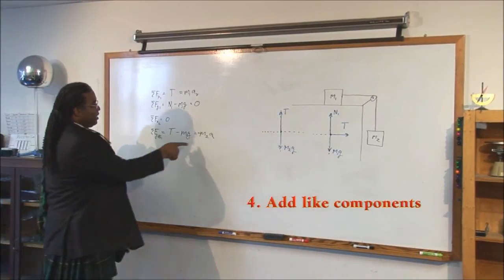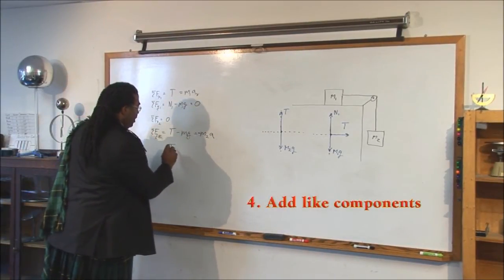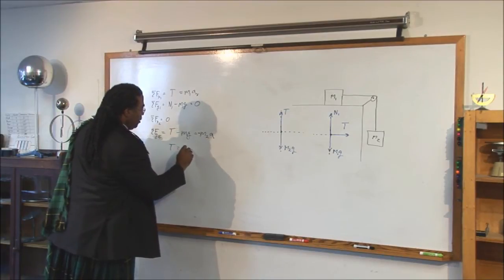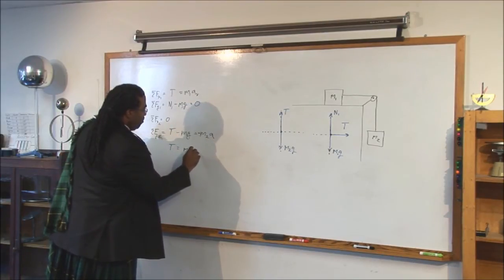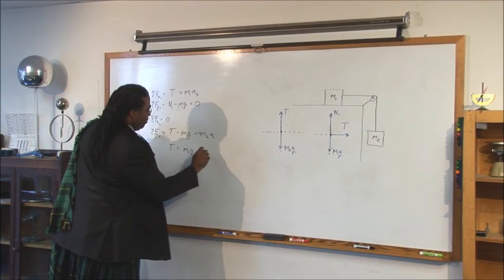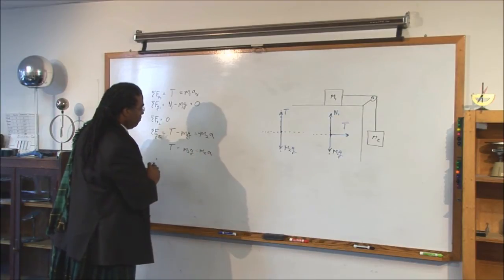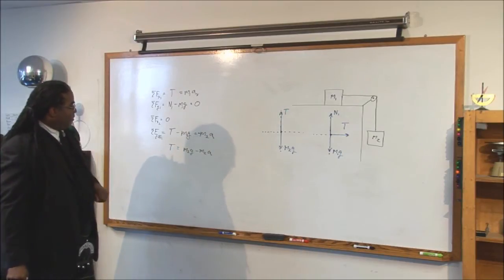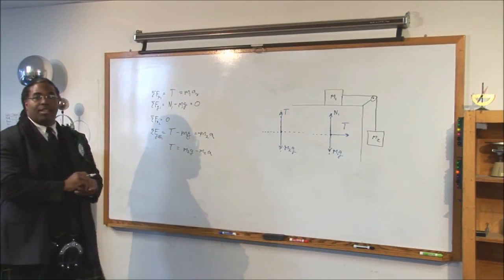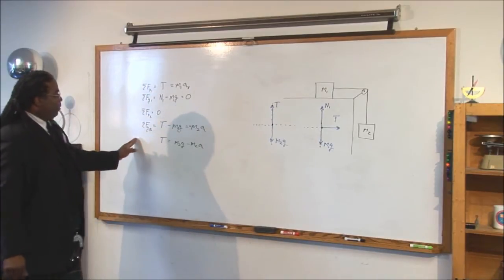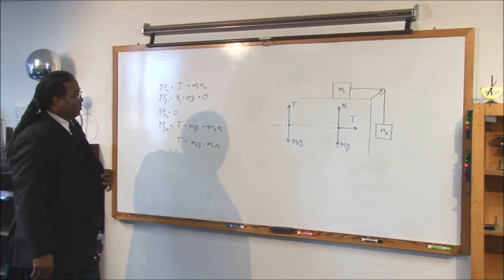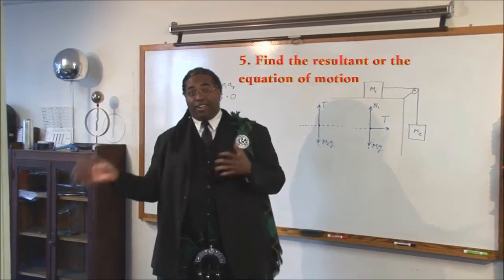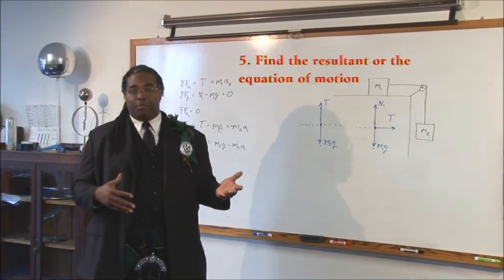So, we can solve for the tension, and the tension would be equal to m2g minus m2a. Since we brought the m2g over, it became positive, just like here. We've now finished step four. We've added like components. So, now all we have to do is step five, which is either find the resultant or the equation of motion. In this case, we're going to find the equation of motion.